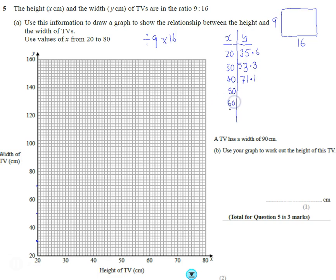50, 60, 70. 50 divided by 9 times by 16, 88.9 rounded. 60 divided by 9 times by 16, 106.7. 70 divided by 16 times by 9. Oh, wrong way around.